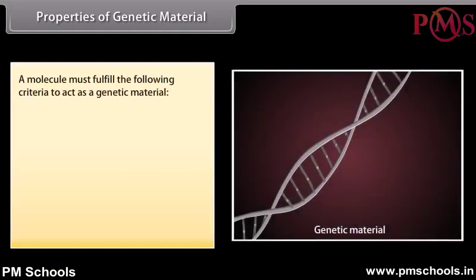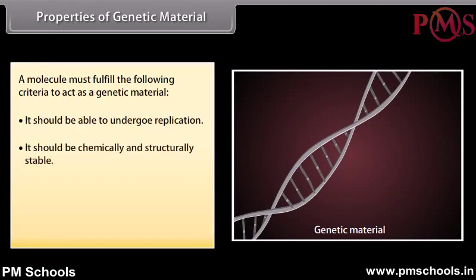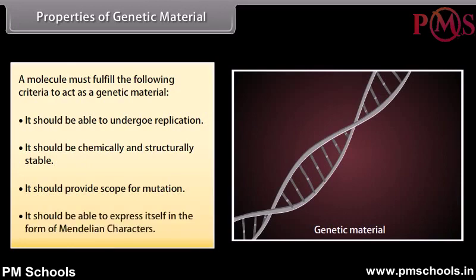Properties of genetic material. A molecule must fulfill the following criteria to act as a genetic material: it should be able to undergo replication; it should be chemically and structurally stable; it should provide scope for mutation; and it should be able to express itself in the form of Mendelian characters.